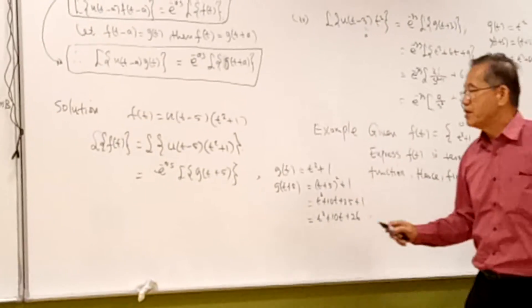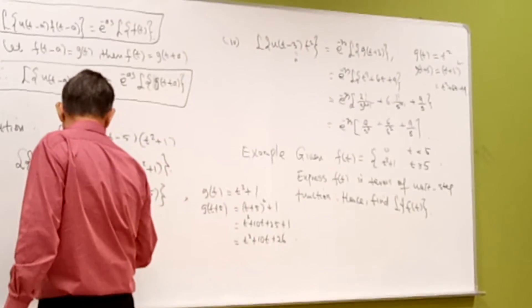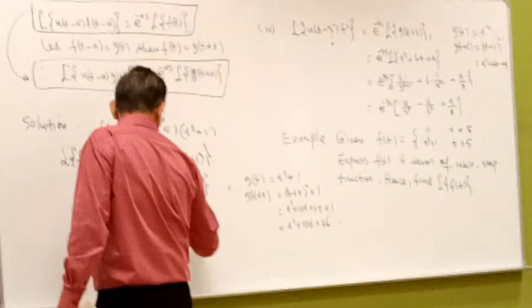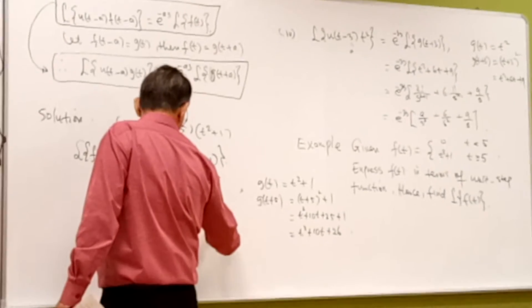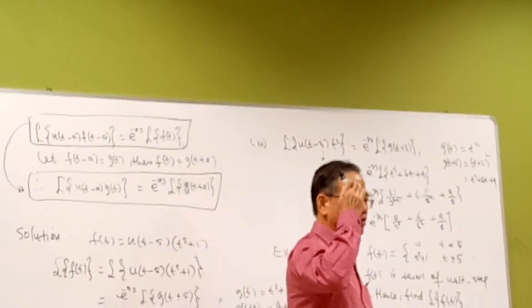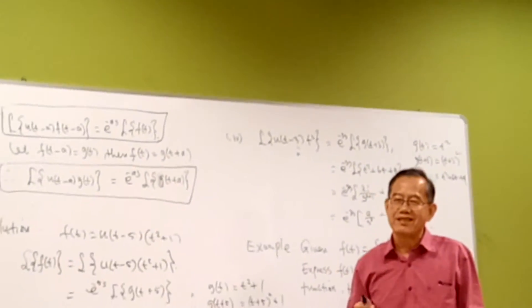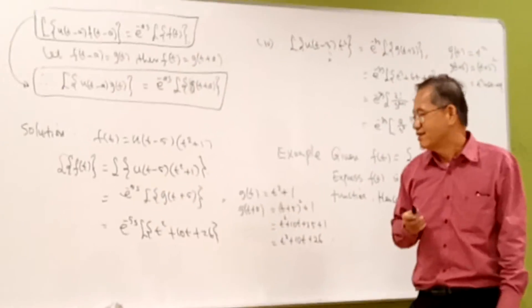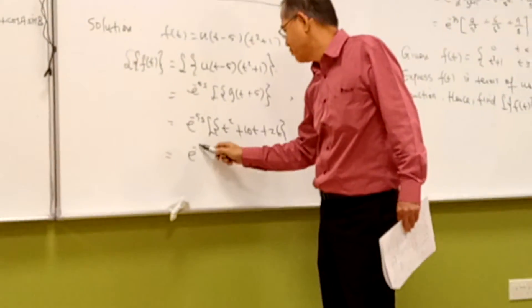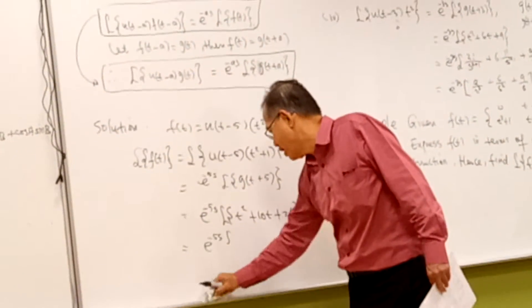So that means you are finding the Laplace transform of t² + 10t + 26. This one is e^(-5s) times the Laplace transform of t² again.